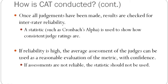Once all judgements have been made, results are checked for inter-rater reliability. This is done by calculating a relevant statistic, such as Cronbach's alpha, and it is used to show how consistent the ratings that the judges give are to one another. If reliability is high, the average assessment of the judges can reliably be used with confidence as a reasonable evaluation of the metric. However, if assessments are not reliable, the statistic should not be used.